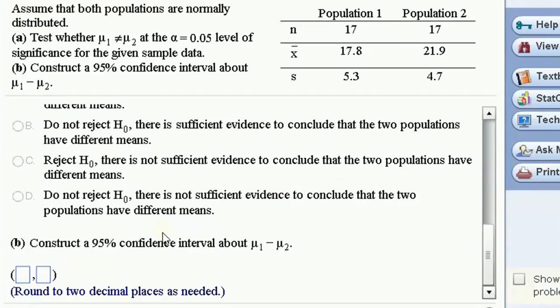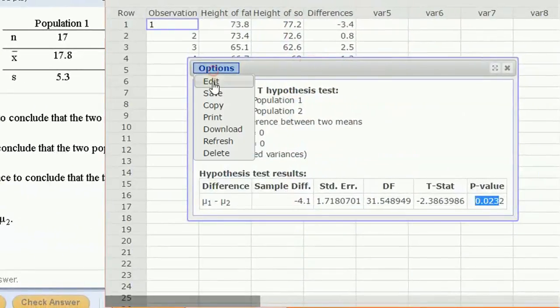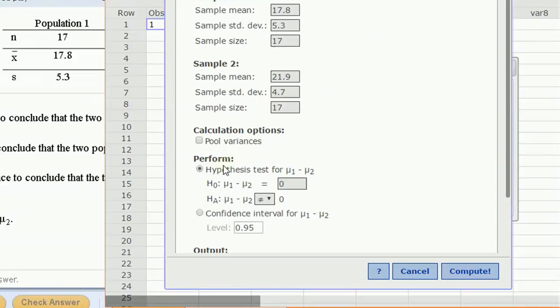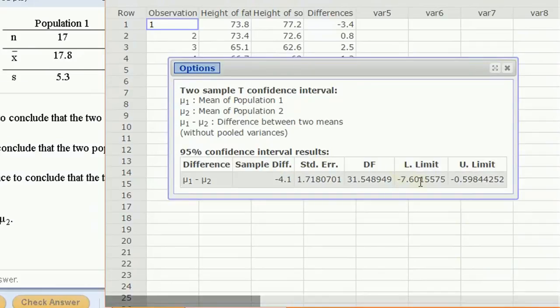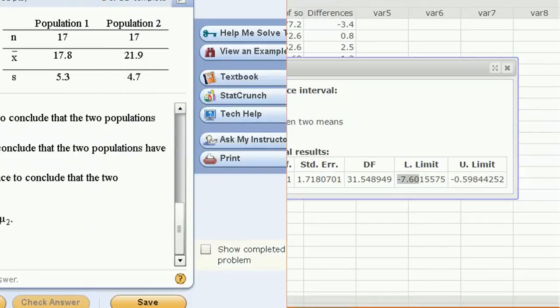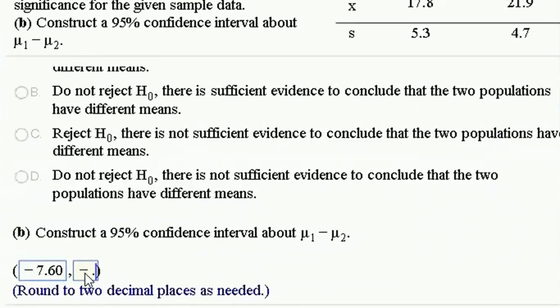And a 95% confidence interval? We can just go back to here, edit, and change it from a hypothesis test to a confidence interval, and click compute. And we get it there. So negative, let's see, two decimal places, negative 7.60 up to negative 5.9. That's rounded up to negative 0.6.